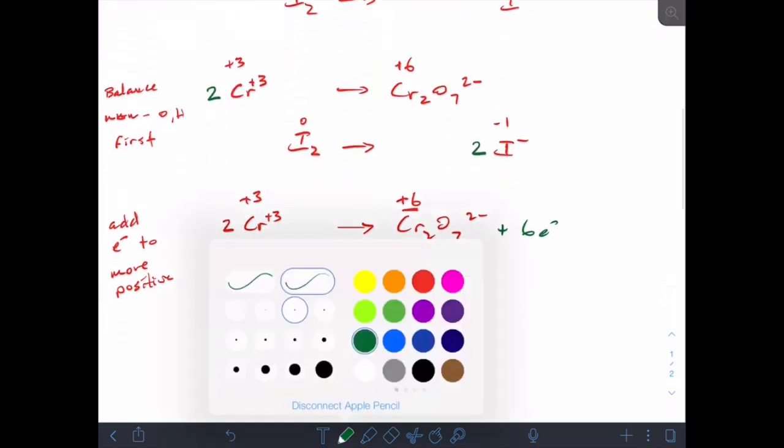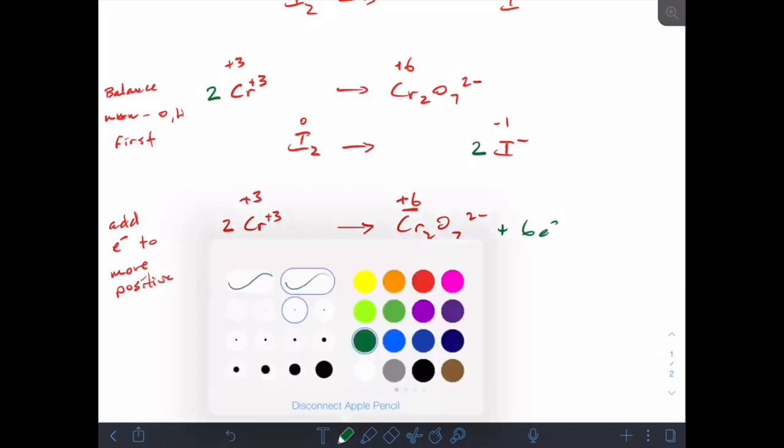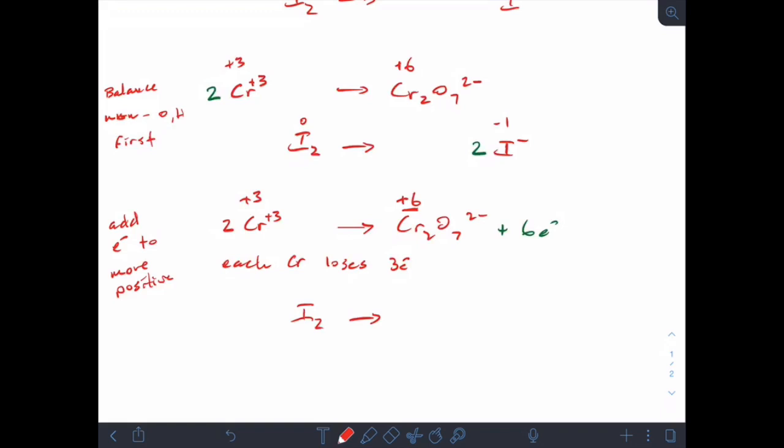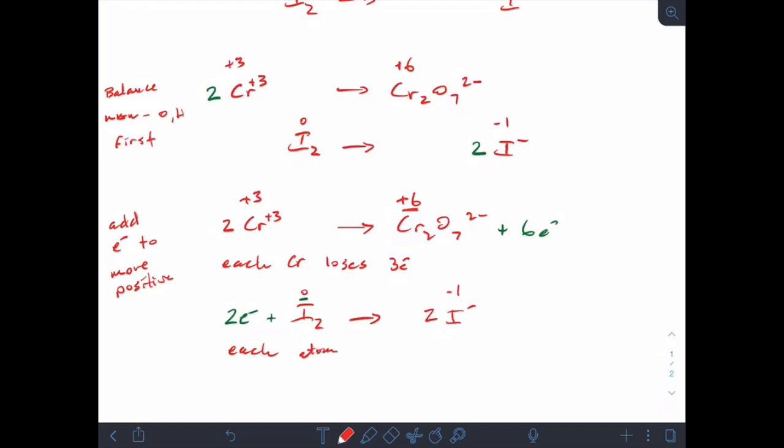So let's look at the iodine half reaction and do the same thing. So I've got I2 going to 2I minus, and that's a 0 and a minus 1. So each iodine is gaining an electron, gaining one electron. So I've got a total transfer of 2 electrons in this process. I'm going to put them on the more positive side, which is the side with the 0. So I've got a 2 electron transfer here. Remember, each atom gains an electron.